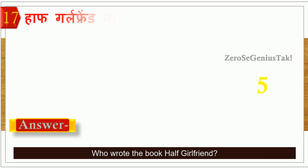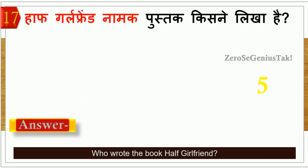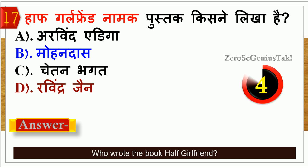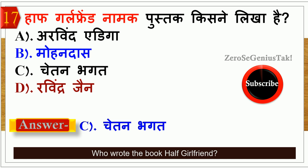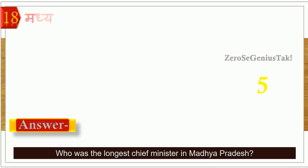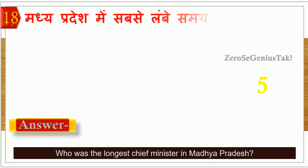Pay attention to this question. The next question is very important: Who wrote the book 'Half Girlfriend'? A movie was also made on it starring Arjun Kapoor and Shraddha Kapoor. The correct answer is option number C — Chetan Bhagat.